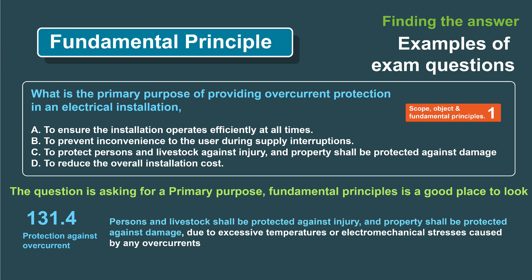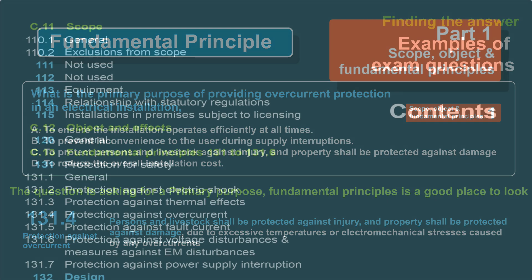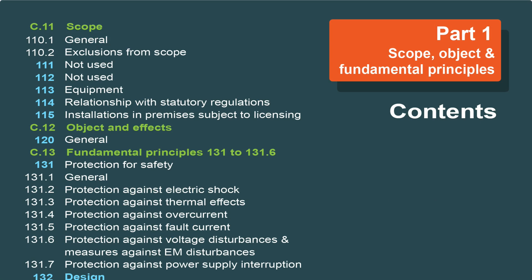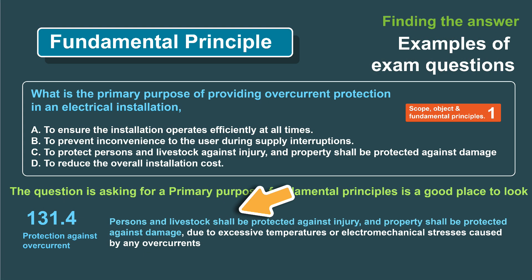Let's look at two quick questions to give you an example. Once you understand the book, you'll be able to read questions and know which part of the book they're referring to. So: what is the primary purpose of providing overcurrent protection in an electrical installation? They're asking for the primary purpose, so we know that's going to be towards the beginning of the book. We go straight to the regulation — persons and livestock shall be protected against injury, and property shall be protected against damage. So we know the answer is C.